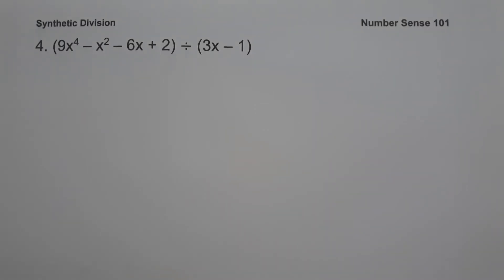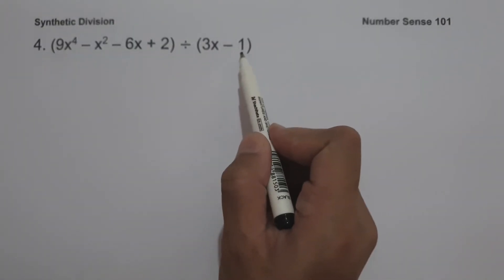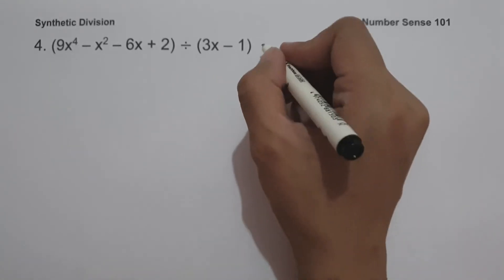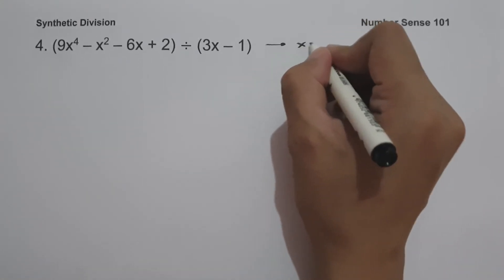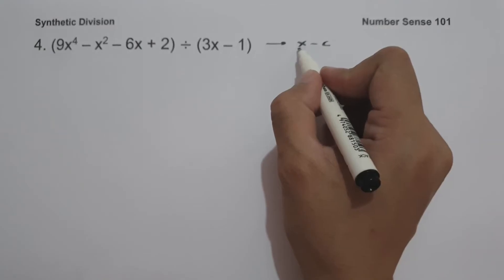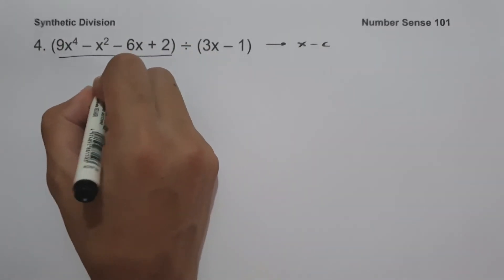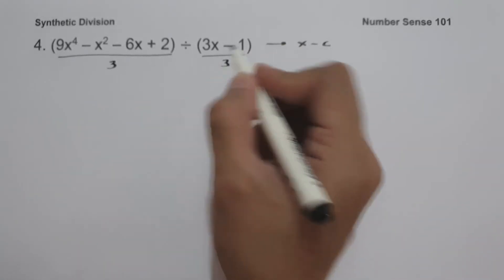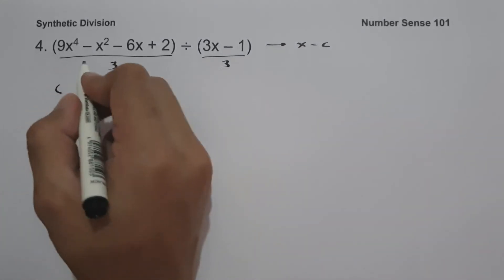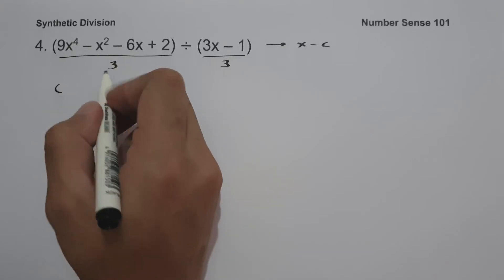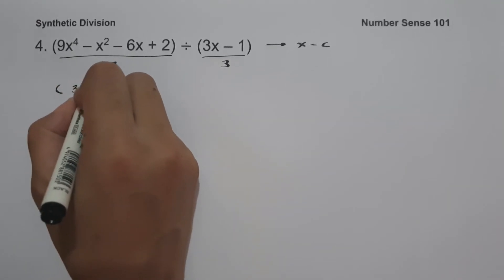On example number 4, we have the quantity 9x to the 4th minus x squared minus 6x plus 2, divided by 3x minus 1. As you can see, our divisor is 3x minus 1 where the coefficient of x is 3. We want to rewrite this in the form x minus c where the coefficient of x equals 1. To do that, we divide the dividend and the divisor by 3.